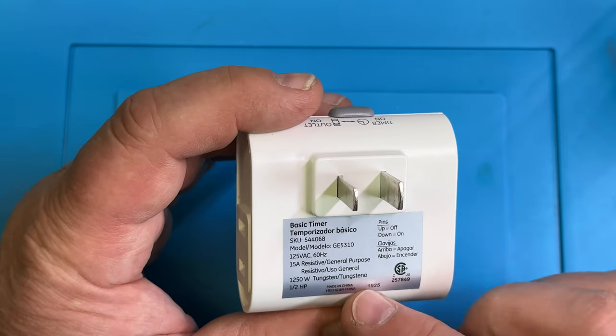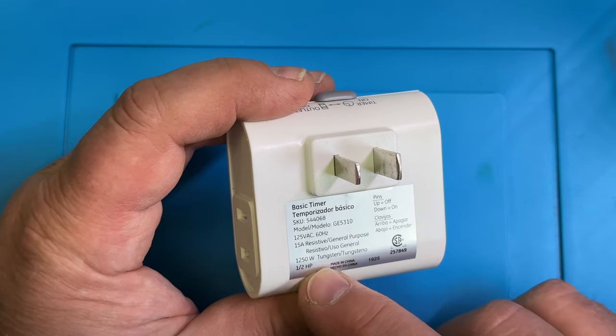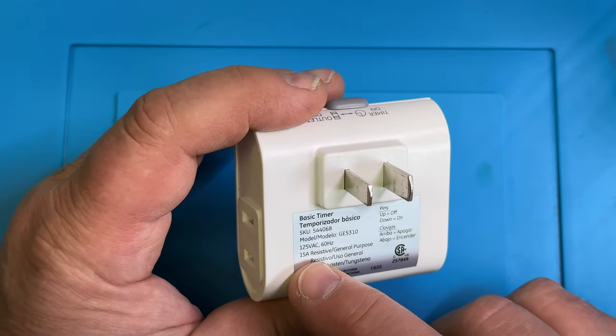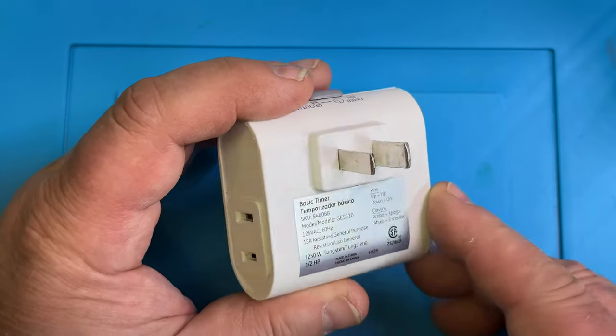And you shouldn't put a very extensive device in there. We see we have here 1250 watt tungsten, half a horsepower, 15 amp. That's the maximum you can use here in this one.